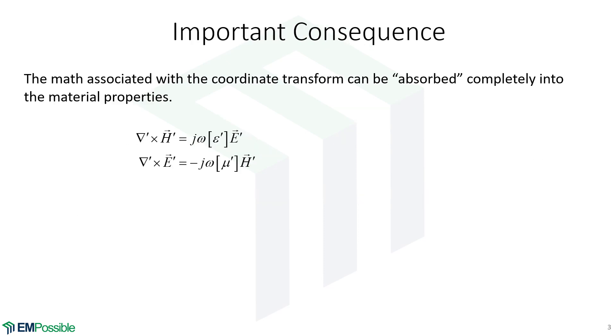Here's the all-important consequence of this. If we apply a coordinate transform to Maxwell's equations, and here we've done that, so the little prime superscript means that we're in some other coordinate system. Imagine we go back. All of the math associated with that transform can be lumped into and absorbed into the permittivity and permeability, the material properties terms.